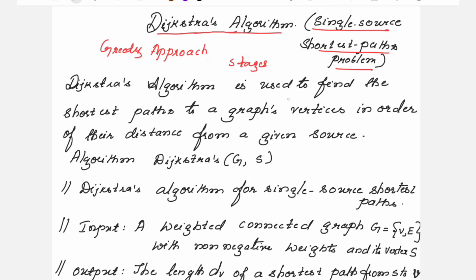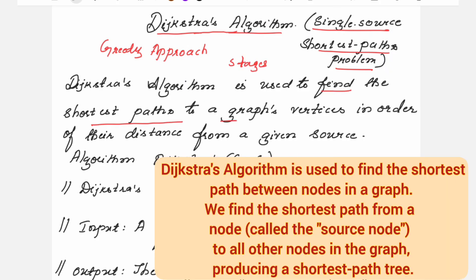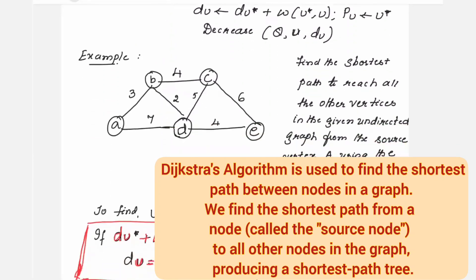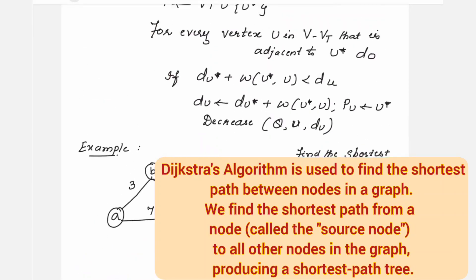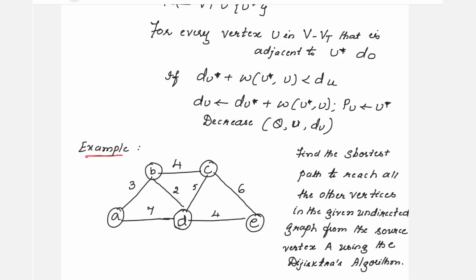Dijkstra's algorithm is used to find the shortest paths to a graph's vertices in order of their distance from a given source. The given will be a graph. Dijkstra's algorithm will work for both directed and undirected graphs. In this example, I have taken an undirected graph.